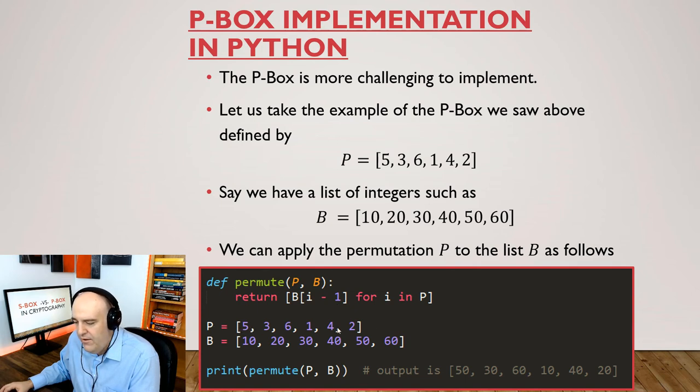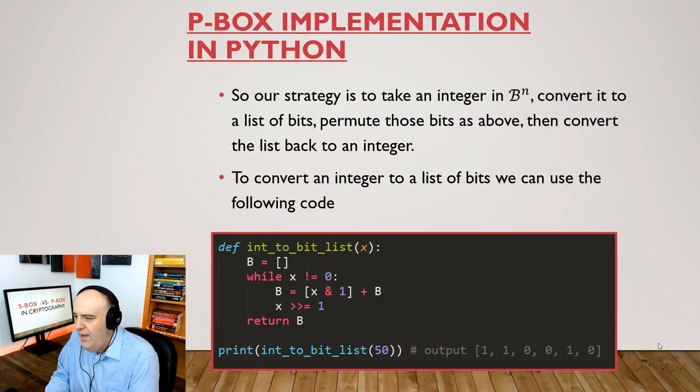So if we have our P value, our P list here, and then our list of values B, and we apply this permutation to it, we get what we expect: 50, 30, 60, 10, 40, and 20. So we see that using this technique, we can permute a list of integers. And I think our strategy should be then is if we take an arbitrary element of BN, we'll convert it to a list of bits or we'll permute those bits in exactly the way we just saw. And then we'll take that list of bits and convert it back to an integer. So let's see how we can do that.